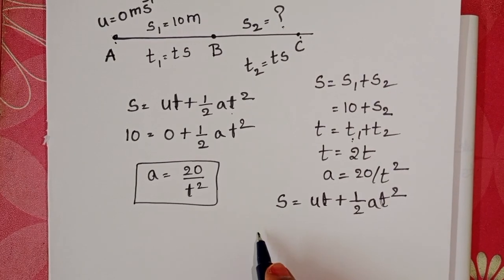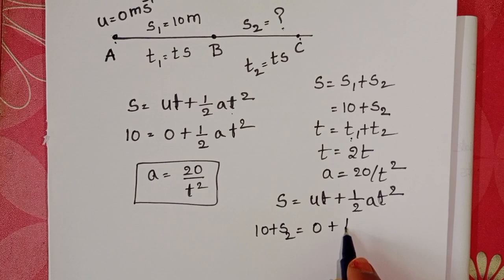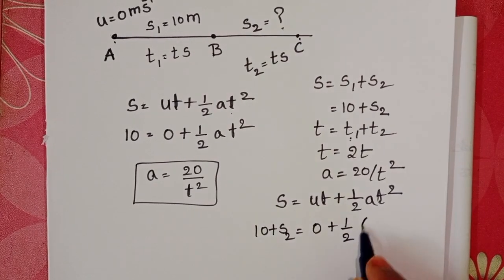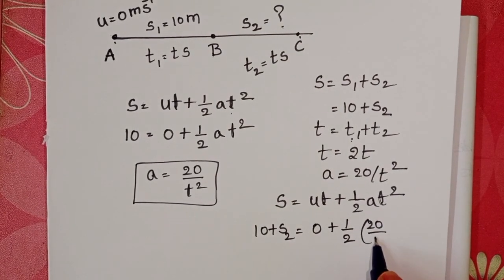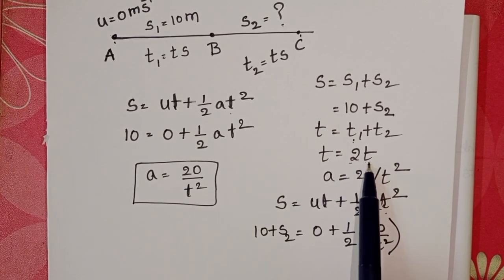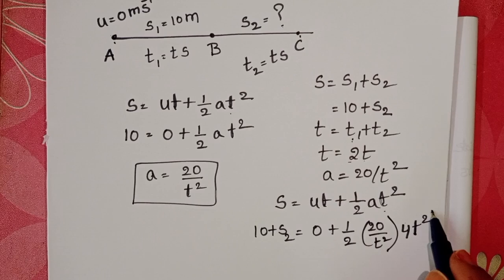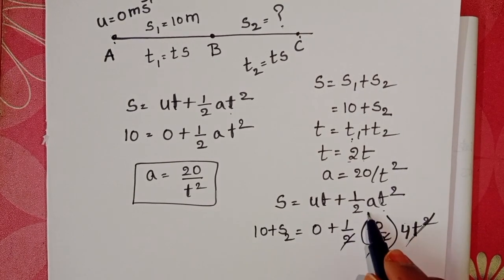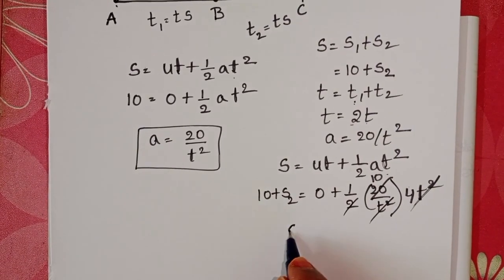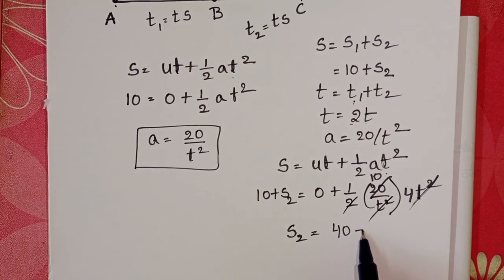Total distance 10 plus S2. Initial velocity 0 plus half into acceleration 20 by t-square. And total time is 2t. 2t whole square becomes 4t-square. T-square get cancelled. Then S2 equals 10 into 4, 40 minus 10.